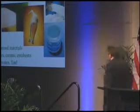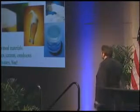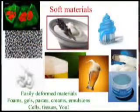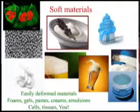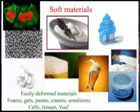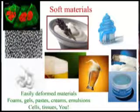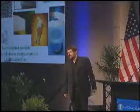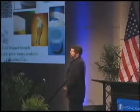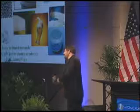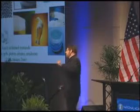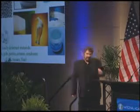What are soft materials? Here are examples of soft materials — common materials around you: the foam on the beer that you're going to drink tonight, paste that you use for a toothbrush, foams, gels, emulsions. Cells are soft material. Tissue is soft material. Even you are soft material. And if you don't believe me, pinch yourself. You may believe me, but it will certainly wake you up.